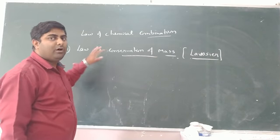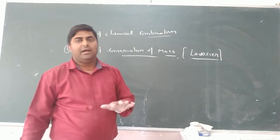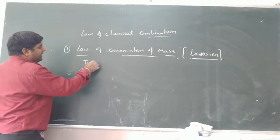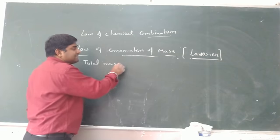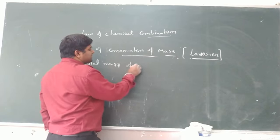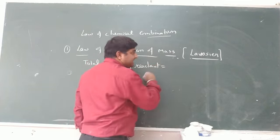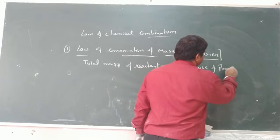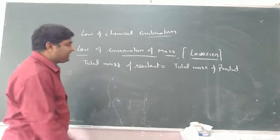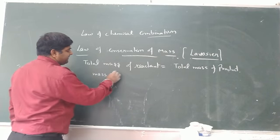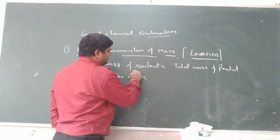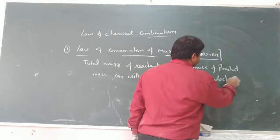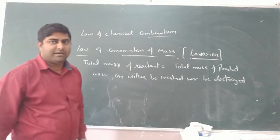The first law is the law of conservation of mass, which is given by Antoine Lavoisier. This law states that the total mass in a chemical reaction is always conserved. That means the total mass of reactants is always equal to the total mass of products. Mass can neither be created nor be destroyed — the mass is always conserved.